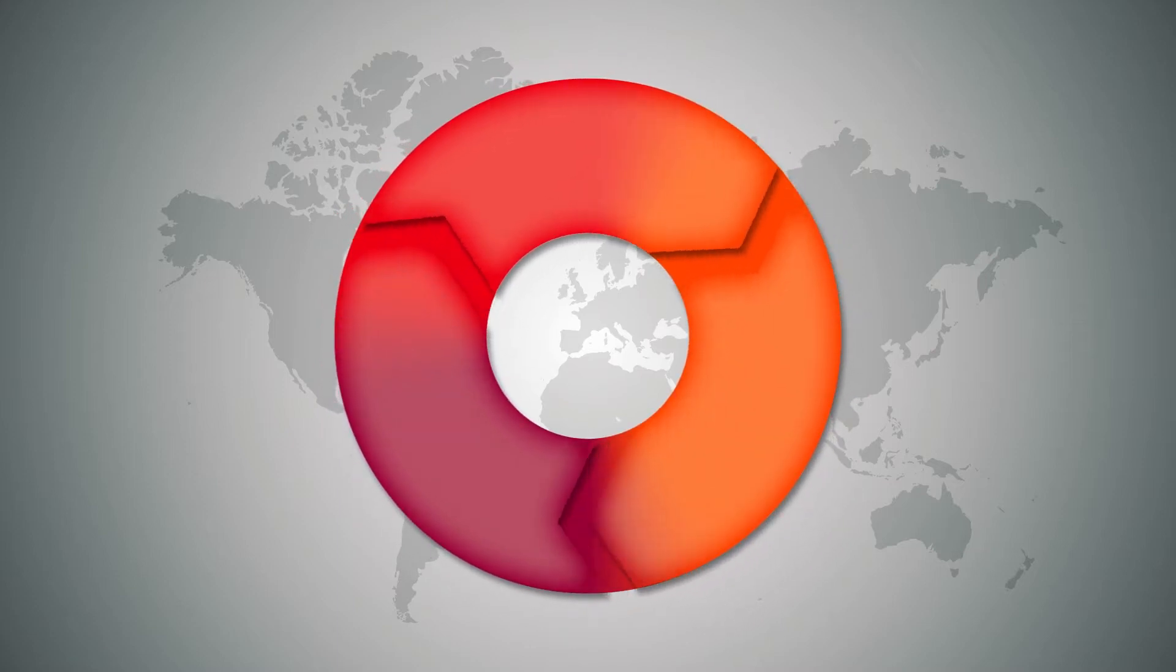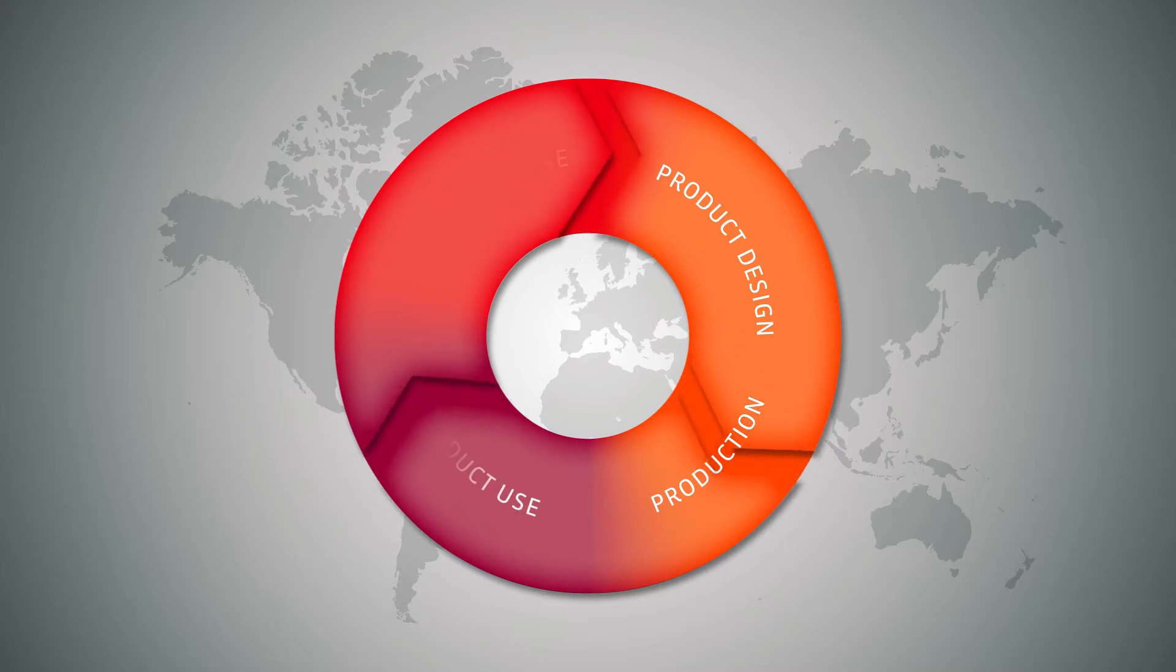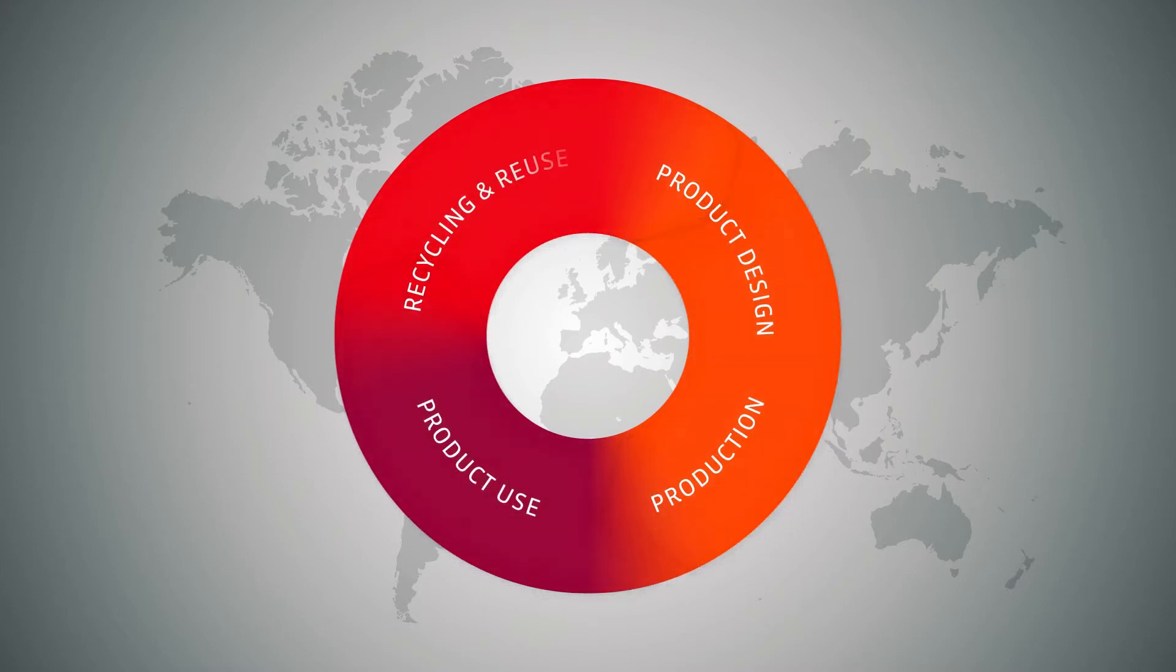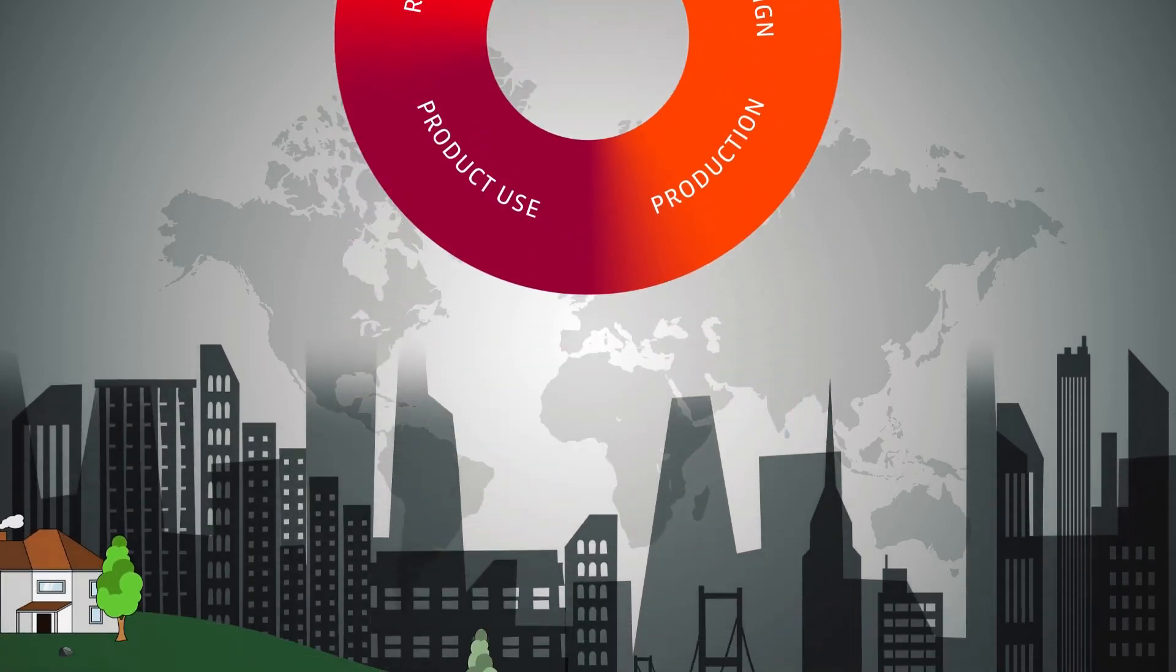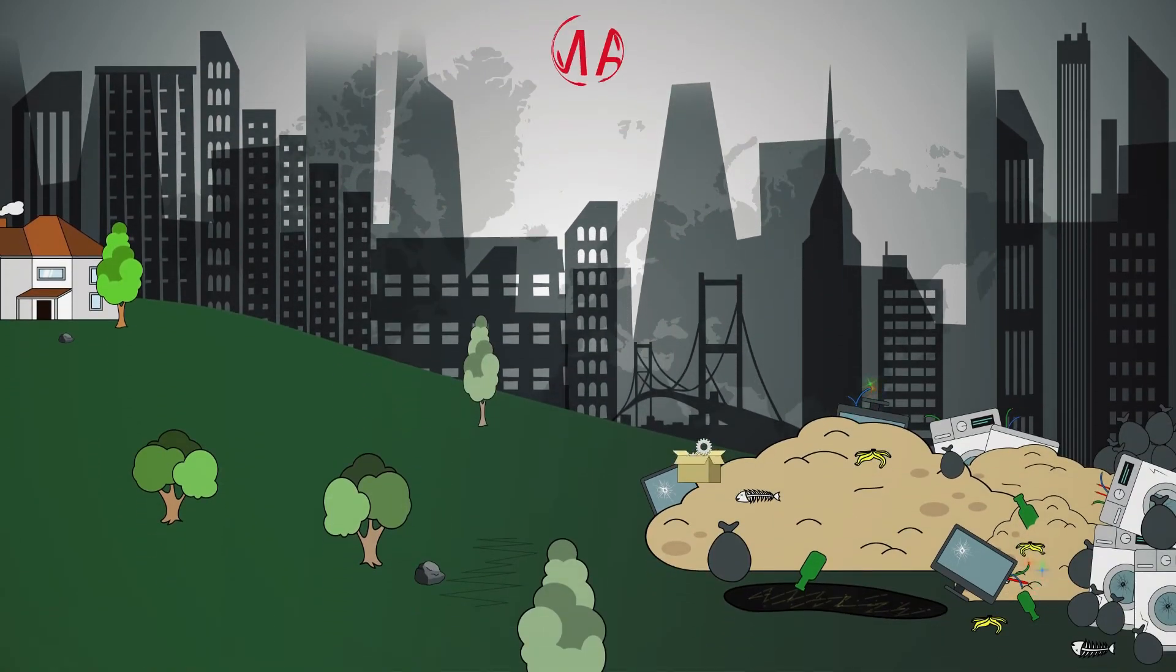In order to move from a linear to a circular economic system, there's one key thing everyone involved must have: information about the composition of the products in the form of digital data. Why?